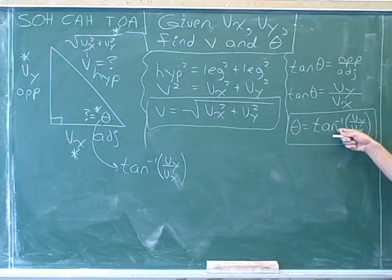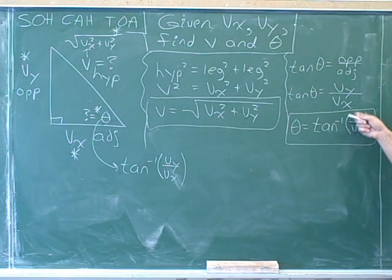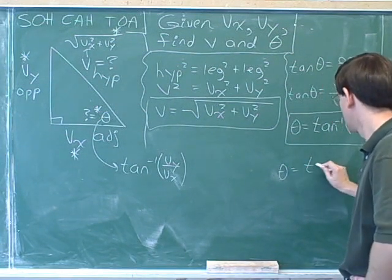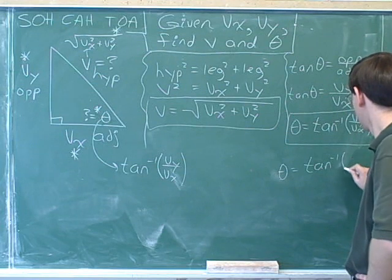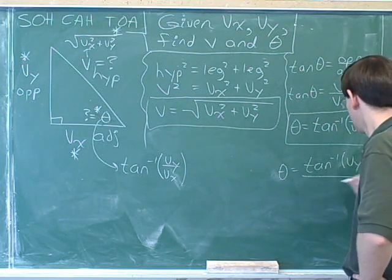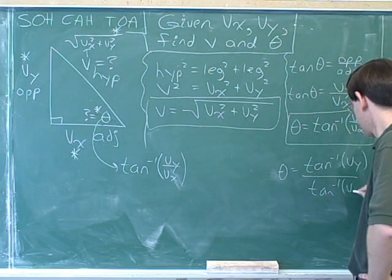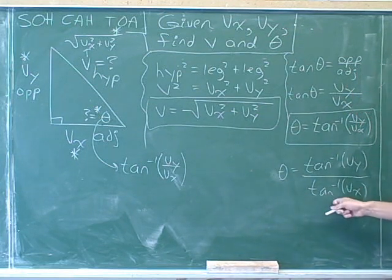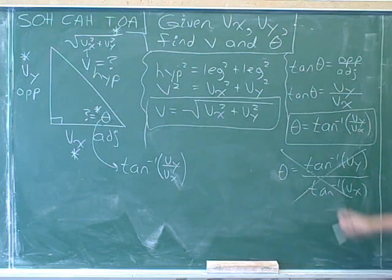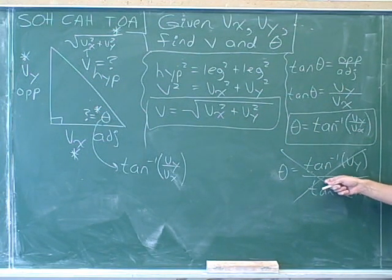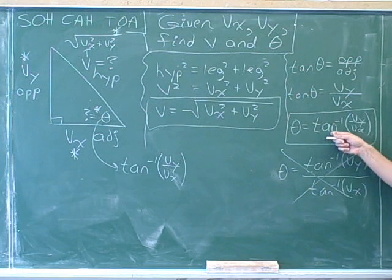There is no way to simplify this further. You can't distribute the inverse tangent over the top and the bottom. That might have been tempting, but it's totally wrong — you can't do this. There's no way to simplify this inverse tangent, so we should not do this. This is our final answer.